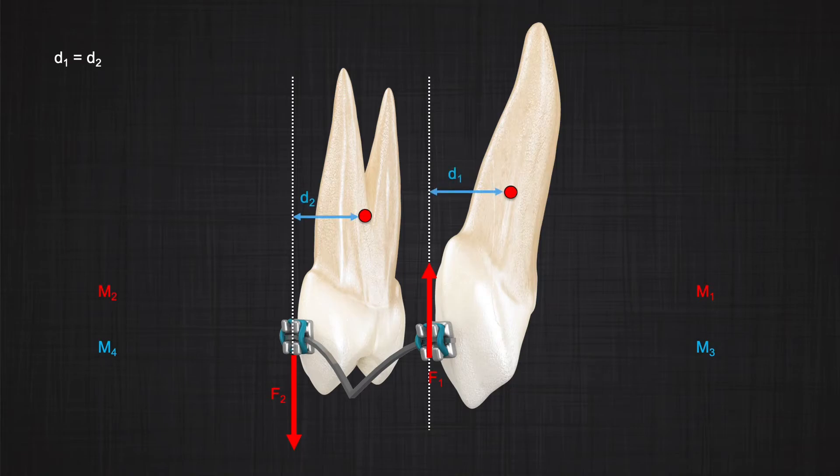Depends on the line of action of the force and the distance from the center of resistance of each one of the tooth, the amount of the moments that appears on each tooth would be different. However, because rectangular wire is rigidly connected to adjacent teeth, each one of the tooth cannot move without affecting the adjacent tooth. Under this condition, if the distance between the center of resistance and line of action of each tooth is equal, in this example D1 is equal to D2, the magnitude of the moment that appear in the system would be equal and opposite.